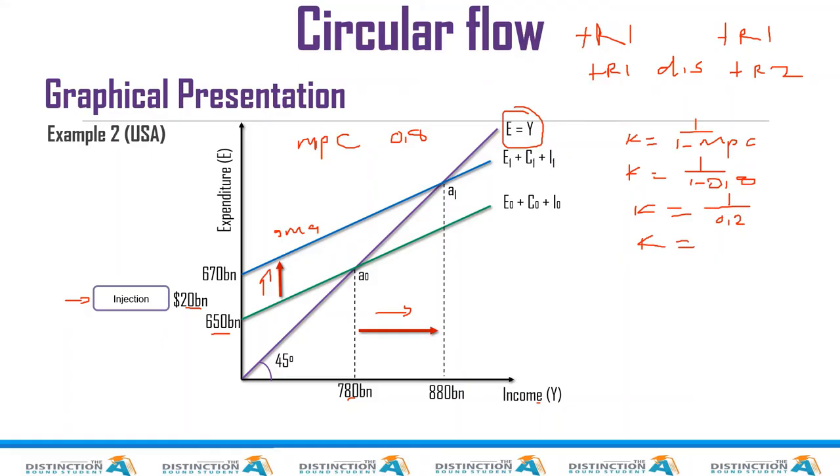So our multiplier was five. So let's multiply this 20 by 5. You see, if we multiply this 20 by 5, what is 20 times 5? The answer is 100. So what is this 100? Is the effect.